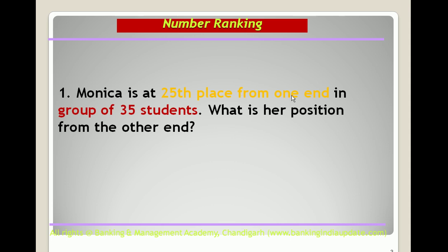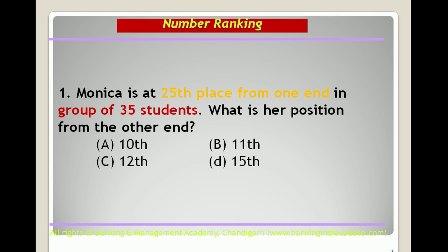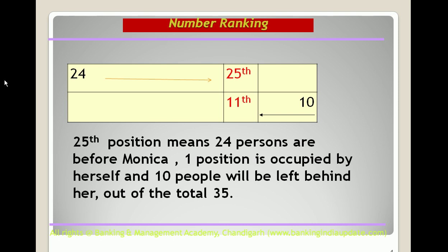Monica is at the 25th place from one end in a group of 35 students. What is her position from the other end? Monica is at 25th position, so 24 people are before her. Total students are 35, meaning 10 people are behind her. Her position from the other end will be 11th. The chart shows: 24 persons before Monica, 1 position for herself, and 10 people behind her out of 35.